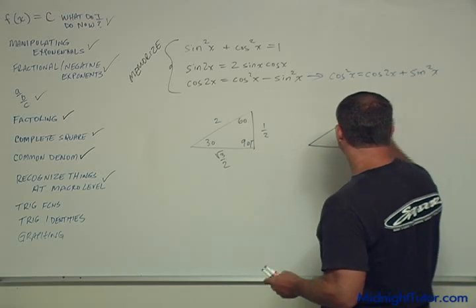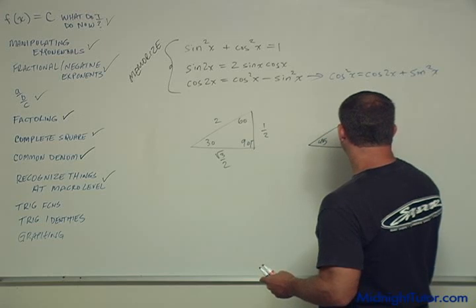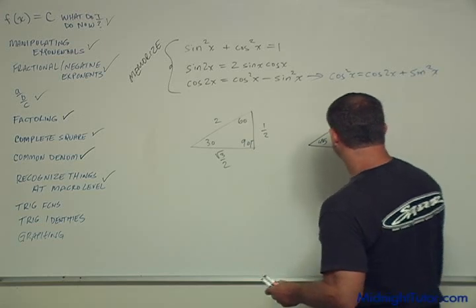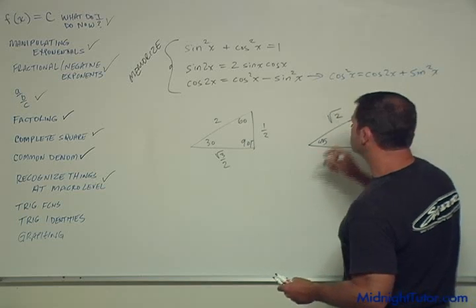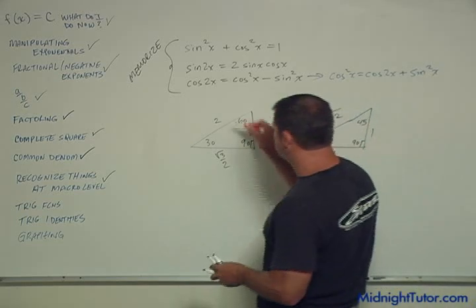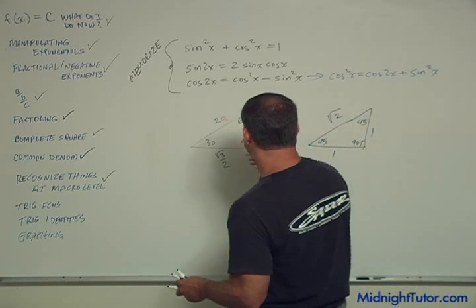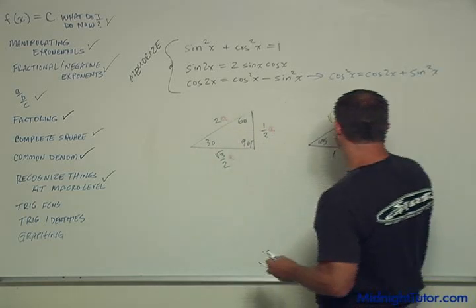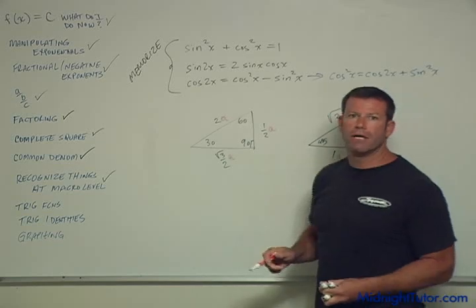Then you have another triangle, 45, 45, 45, 90 and this is one, one square root of two, right? And you can multiply these by some factor, right? So this is the same as 2a, a over two and square root of three over two a or square root of two a, a, a. These two you have to remember in your head.